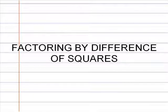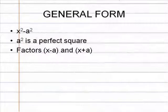For our next example, we will do an example of factoring by difference of squares. The general setup for any polynomial that can be factored using difference of squares is x squared minus a squared, where a squared is a perfect square. And when factored, you get x minus a with x plus a, where a is the square root of a squared.